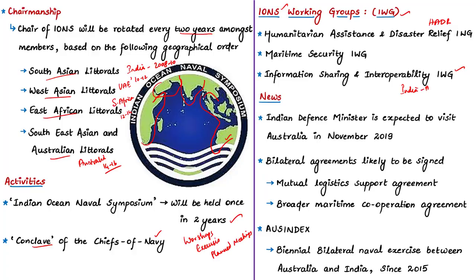In the last paragraph of the news article, it states that both the Indian Navy and Royal Australian Navy are co-chairs for the IONS Working Group on Information Sharing and Interoperability, and the inaugural meeting was hosted by Australia in June 2019. This is all you need to know about IONS. You cannot remember all the countries, but know that there are four regions — try to know the important countries in each region.